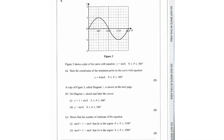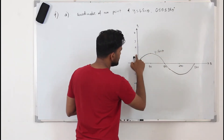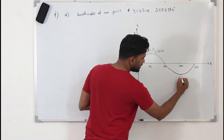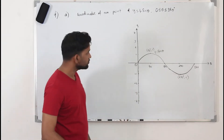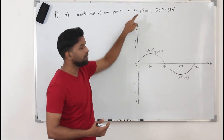Looking at question 9, we are given a part of a sine curve from 0 to 360. Part (a) asks us to state the coordinates of the minimum point of the curve y = 4sinθ, where θ is from 0 to 360. For y = sinθ, the maximum point is at (90°, 1) and the minimum point is at (270°, -1). But we need the minimum of 4sinθ, which means the sine function is being multiplied by 4.